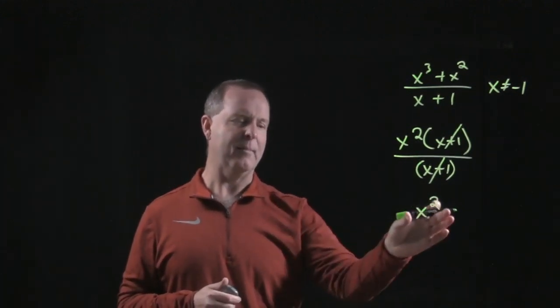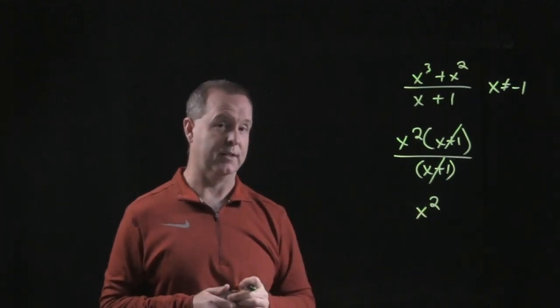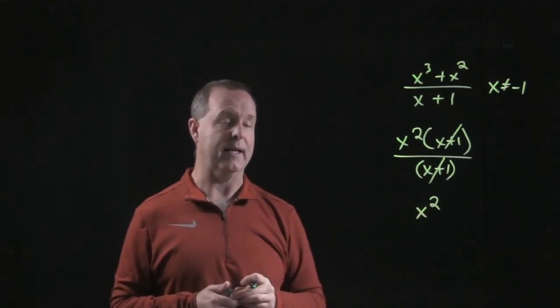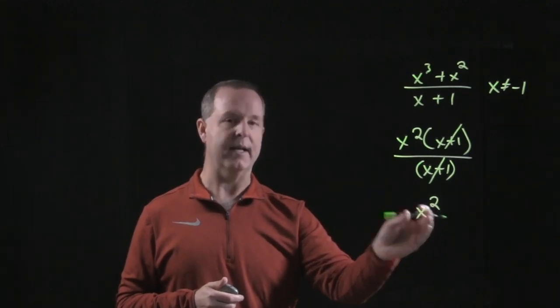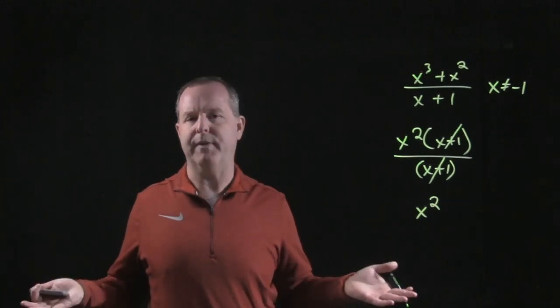However, in my simplification, there is no denominator, there is no restriction as far as what my values can be. If x equals negative 1 here, that doesn't affect my denominator, doesn't make it go to 0. So what's up with that?